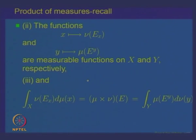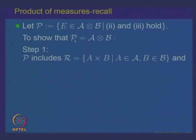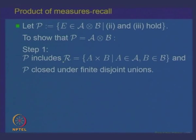The third claim is that if we integrate these non-negative measurable functions with respect to mu and nu respectively, then the integral of nu(E_x) d mu(x) equals the product measure mu cross nu of E, and it is the same as the integral of the y-section with respect to y. This is the step we were trying to prove in the previous lecture.